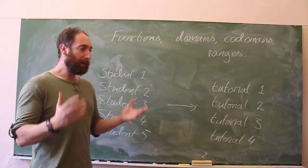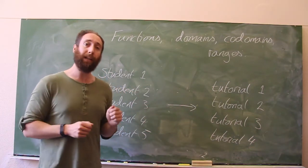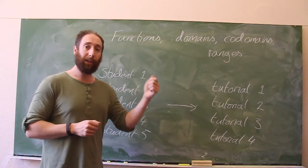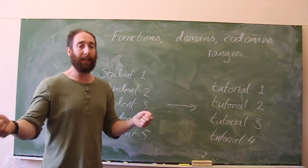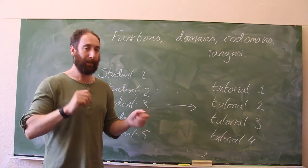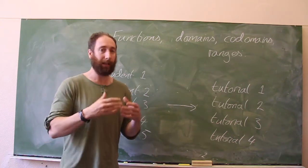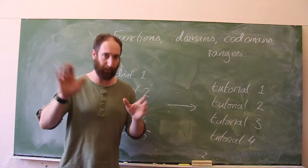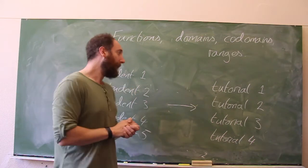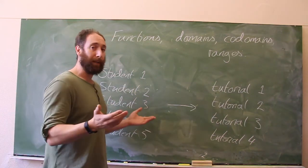A function — all it does is it takes two sets and assigns the elements of one set to elements in the second set. Those sets could be sets like the real numbers or the complex numbers, which we'll see later, or they could be discrete elements.